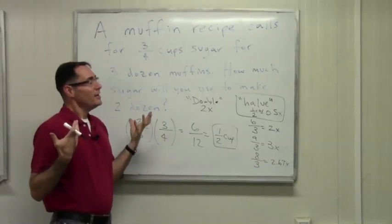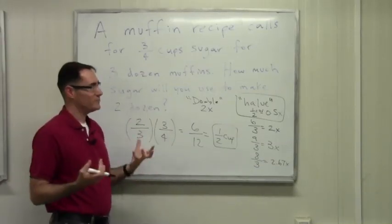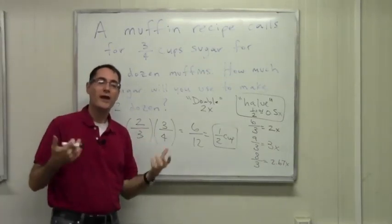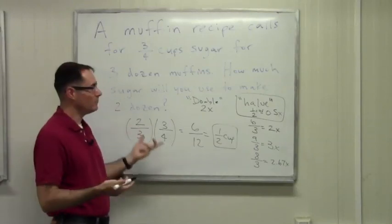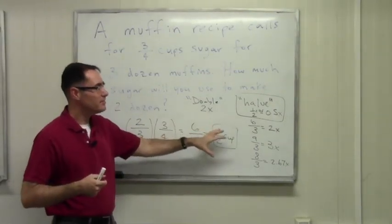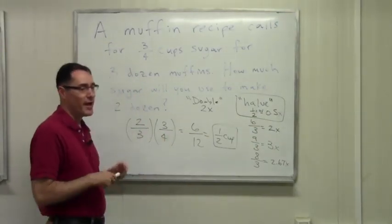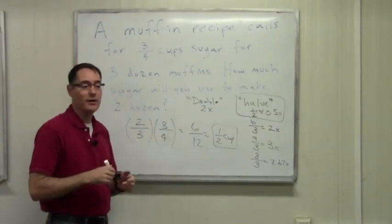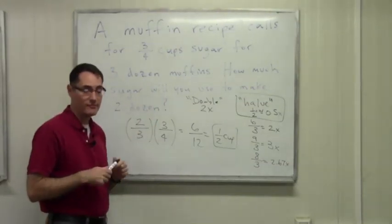So finally, if you have something like this — and this goes for a lot of different problems — if you know how to solve a simpler version of the problem, like doubling the recipe, use that pattern to expand your ability to solve the problem for any inputs you might have.